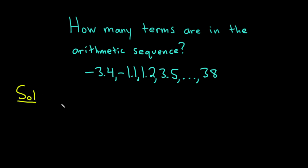Solution. We're going to use a formula to solve for the number of terms. The formula is the formula that gives you the nth term. The nth term is a sub n equals a sub 1 plus n minus 1 times d. This formula gives you the nth term of an arithmetic sequence.